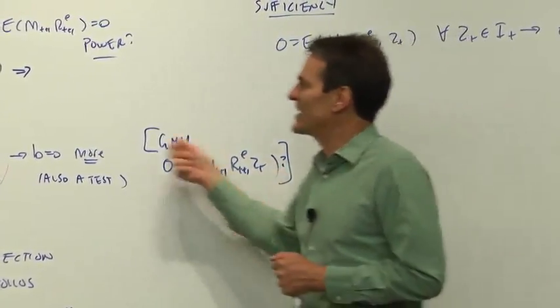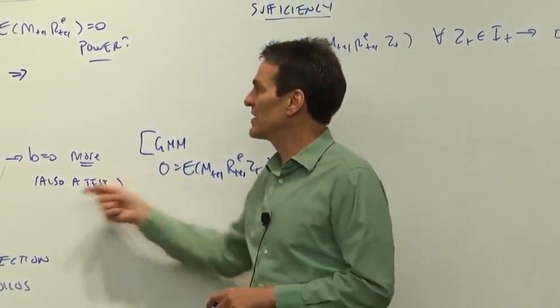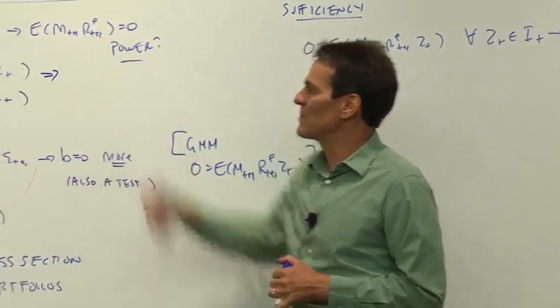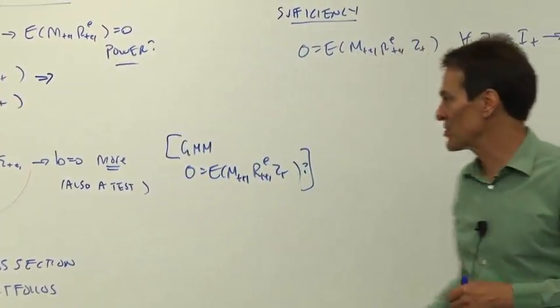From that point of view, we're adding instrumental variables to add power and to let us see whether the conditional mean of MR is 0 as well as the unconditional mean.